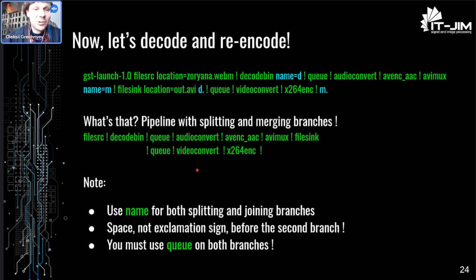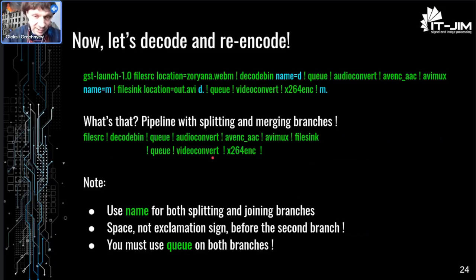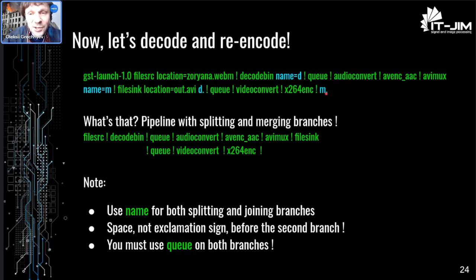Now let's decode and re-encode. We take a WebM video, decode it with decodebin into audio and video track signals. Then we have the audio branch: queue, audioconvert, encode in AAC. The video branch: queue, videoconvert, encode with H.264. Then they merge together. The first branch goes into a muxer element with name 'm'. The second branch starts without an exclamation sign, references 'd.' and goes into 'm.' — that's how you do branch pipelines where branches rejoin. Not very difficult. The GStreamer pipeline string is quite powerful.